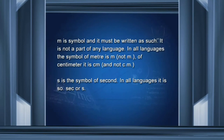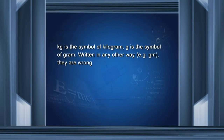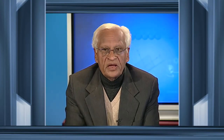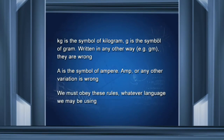Similarly, small s is the symbol of second in all languages — 'sec' or 's dot' are wrong and not acceptable. Similarly, kg is the symbol of kilogram and g is the symbol of gram. Written in any other way, such as 'gm', they are wrong. Capital A is the symbol of ampere — 'amp', which you might find in some books, or any other variation is wrong. We must obey these rules whatever language we may be using for learning.